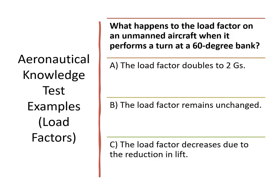Here's an example question that you might see on the Part 107 knowledge test: What happens to the load factor on an unmanned aircraft when it performs a turn at a 60 degree bank? Looking at the graph from the previous slides, the load factor doubles to 2 G's, so the answer is A.